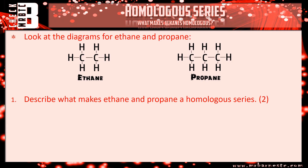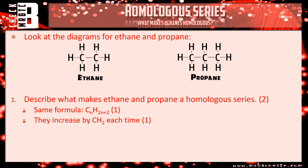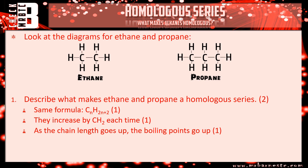Okay, let's go through how you've done. Question one: describe what makes ethane and propane a homologous series. First, they have the same general formula CnH2n+2 — try to include the actual formula. Second, they increase by CH2 each time: ethane is C2H6, propane is C3H8, and the difference is CH2. Third, as chain length increases, boiling points go up — physical properties change in a general trend. Fourth, they have the same chemical reactions — for example, both react with oxygen to produce carbon dioxide and water. Any two of those four points will get you two marks.